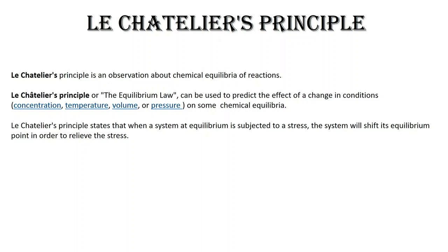Le Chatelier's Principle is an observation about chemical equilibria of reactions. It is the equilibrium law, and it can be used to predict the effect of a change in conditions on chemical equilibria. When a system is at equilibrium and it is subjected to a stress — a change in concentration, temperature, volume, or pressure — the system will shift its equilibrium point in order to relieve the stress.